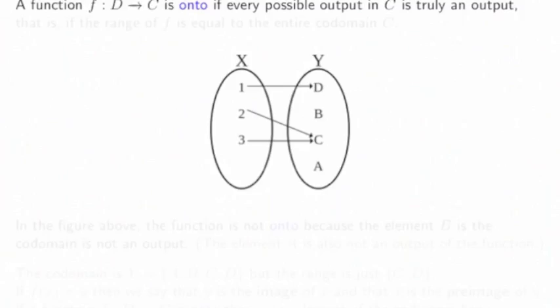A function is onto if every possible output in C is truly an output. That is, if the range of f is equal to the entire codomain C.